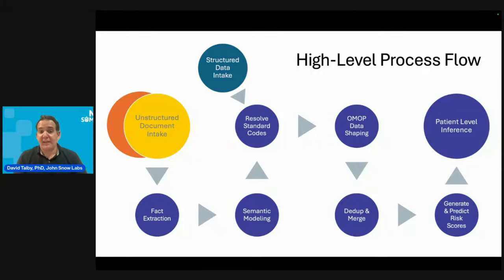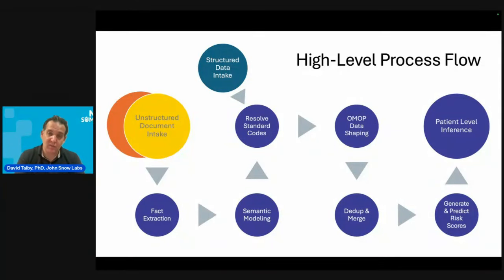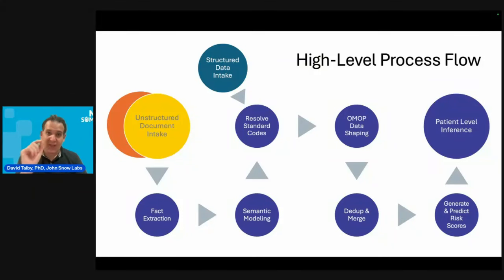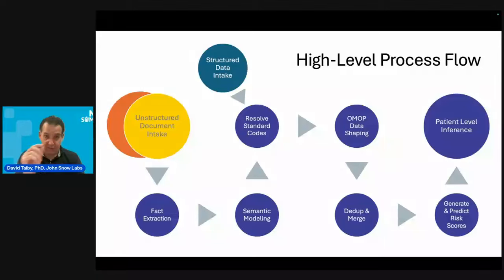Then there is a terminology service — we need to take the structured and unstructured data and map it to a standard set of codes. So, for example, we identify this as stage four kidney disease and apply the same structured code.